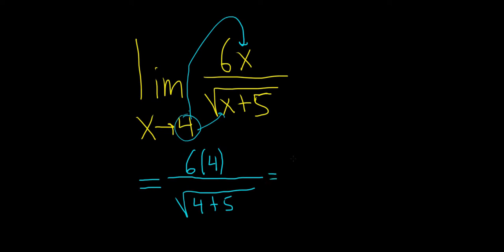6 times 4 is 24. On the bottom we just have 9, the square root of 9. This is 24, and the square root of 9 is 3. So we get 24 over 3 which is equal to 8.